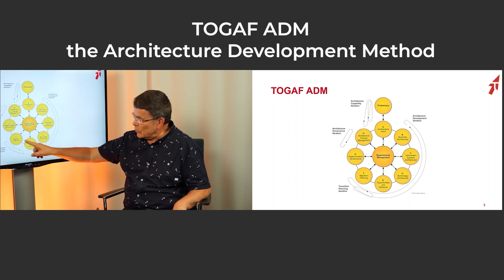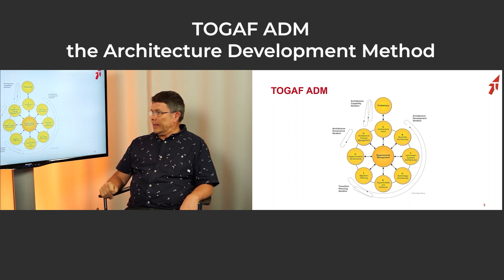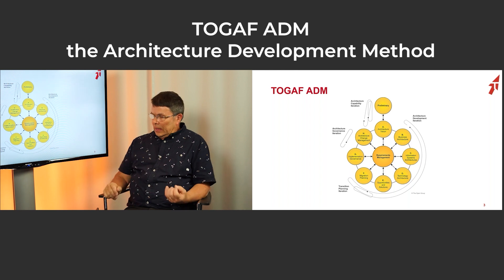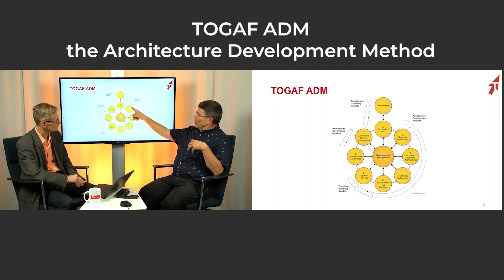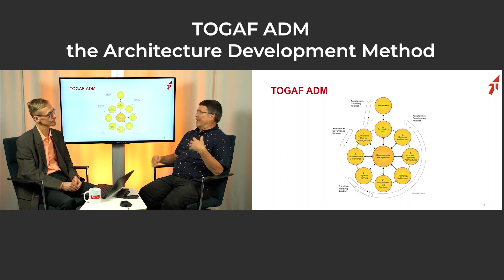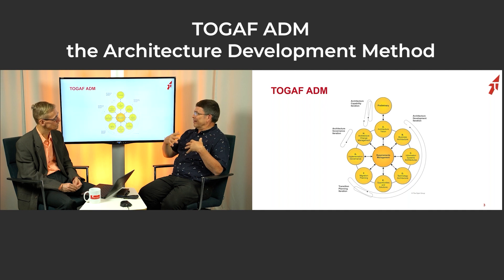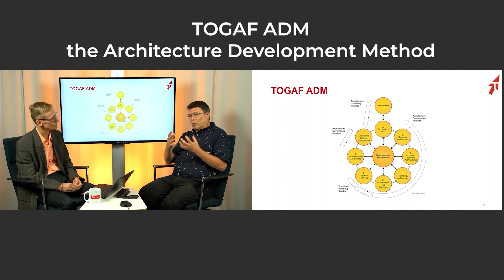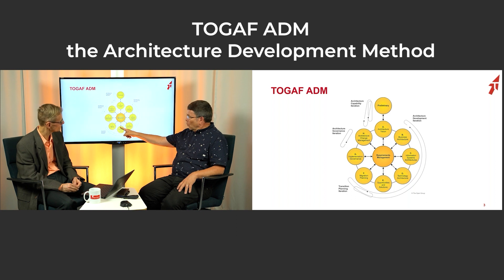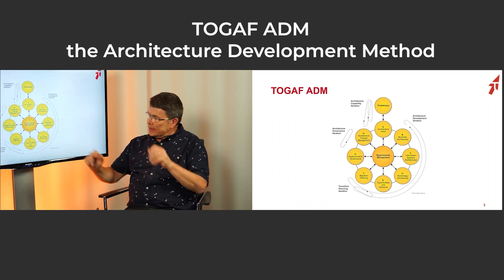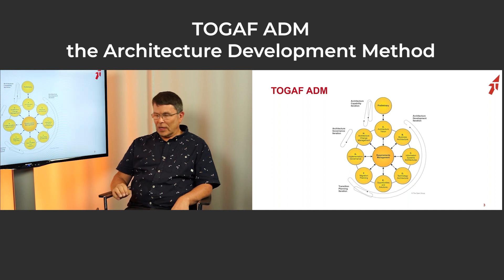Phase E is mainly about creating a high-level roadmap — in what order are we going to do things? Because usually when you do architecture it's not something you can complete as one project the next month; it usually goes over several years. You need some kind of roadmap: what are we going to do this year, next year, the year after? When the roadmap is somewhat ready you go deeper into migration planning.